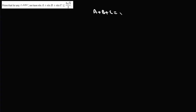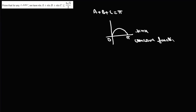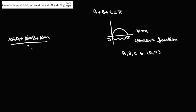The question is: prove that in any triangle ABC, sin A + sin B + sin C ≤ 3√3/2. We know that in a triangle the sum of angles is π, so A + B + C = π. The sine function is a concave function on the interval (0, π), and A, B, C all belong to (0, π). Using Jensen's inequality, we can write [sin A + sin B + sin C] / 3 ≤ sin([A + B + C] / 3).